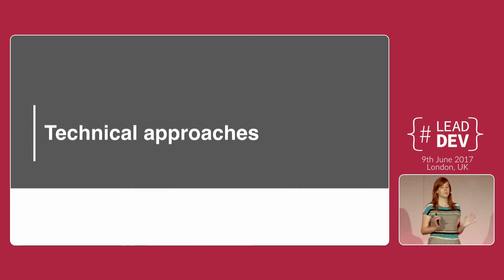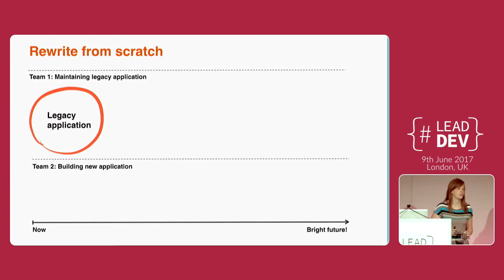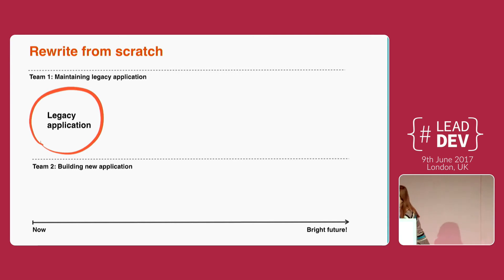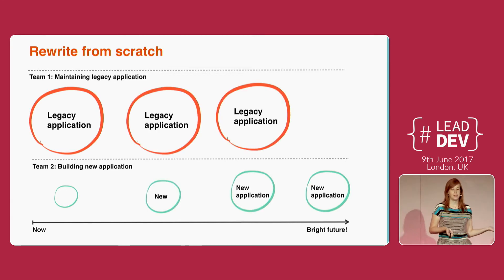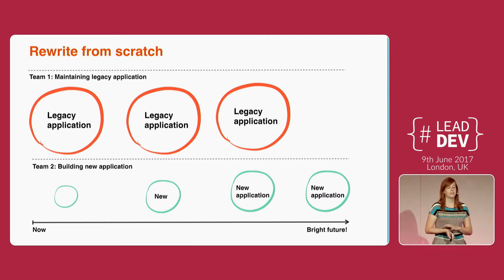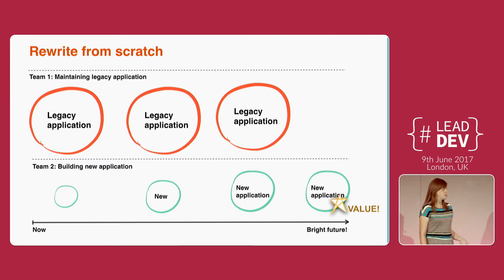So how do you get from the current state to that tech vision? Your first approach might be: throw it all away, start over, rewrite from scratch. What does that look like? There are usually two teams — one maintaining the legacy application because people are using it, and the other building the new one. Until eventually it's done and you deprecate the legacy application. A greenfield project like this is easier to reason about — it's all shiny and new with no baggage. But the biggest issue is that value is only delivered at the very end, and you only discover whether it's maintainable or even the right product at the end.